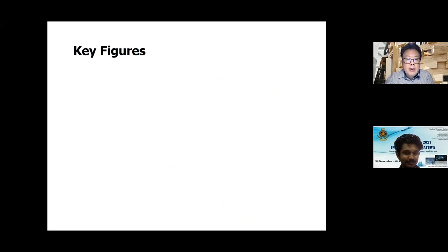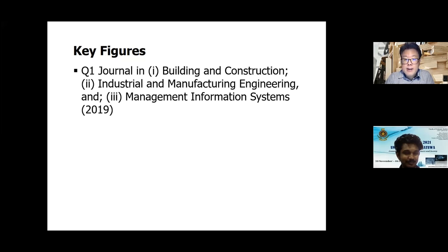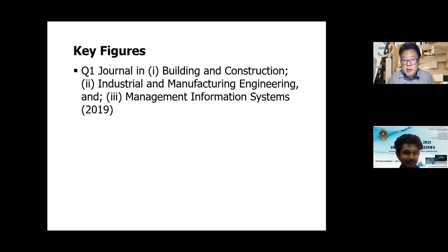Some key figures: Construction Management and Economics is a first quartile journal, indexed in building and construction, industrial and manufacturing engineering, and management information systems — meaning we are rated in the top 25 percent of all journals indexed within these areas. This is one measure of impact, because people are citing our work in order to make progress in research in these particular areas.